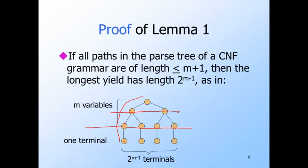Finally, we therefore can conclude that the length of the yield is at most 2^(m-1). Now, 2^(m-1) is N over 2. Since Z is of length N, it cannot be the yield of any tree that has paths limited to length m plus 1 or less. Therefore, we conclude that somewhere in the parse tree for Z is a path of length at least m plus 2.